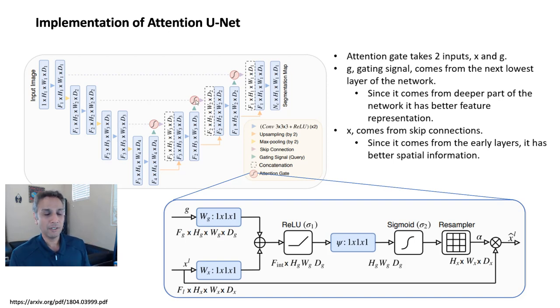And X comes from earlier layers. And by definition, it has from earlier layers means you have better spatial information, but not much feature information. So why is attention potentially can do a good job? Because you have the best of two worlds. You have the spatial information from the skip connection and you have the feature information from here, and then it combines them both.